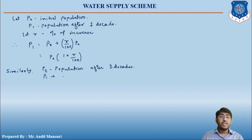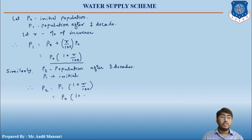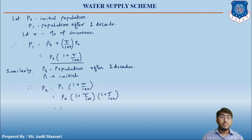P2 will be P1 into (1 + r/100). Now P1 was P0 into (1 + r/100), so this will be equals to P0 into (1 + r/100) into (1 + r/100), which equals P0 into (1 + r/100) raised to 2.